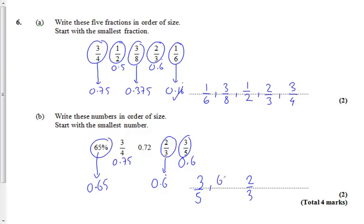So, 65% is the original number, then we've got 0.72 in original form, and then we've got three quarters as the largest.